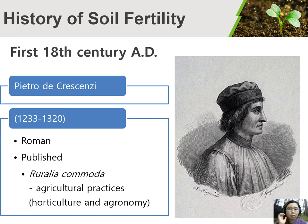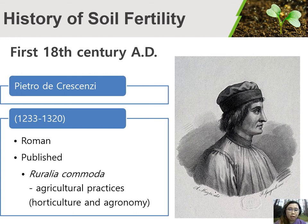Another important personality in the history of soil fertility during the first 18th century is Pietro de Crescenzi, a Roman who published a book titled Ruralia Commoda, which covers topics on agricultural practices, specifically about horticulture and agronomy.